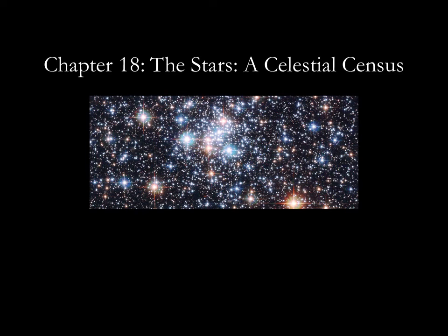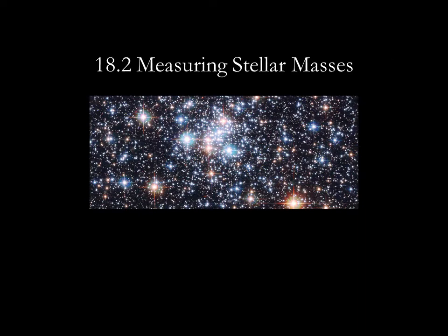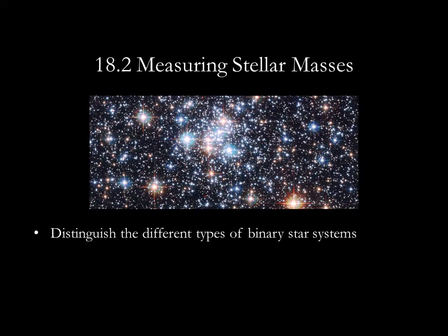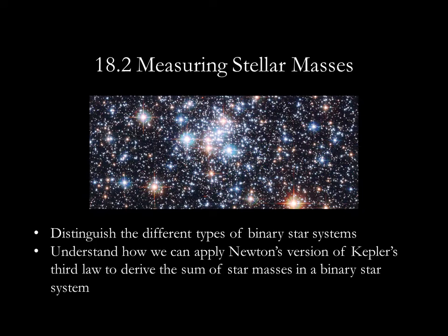This lecture corresponds to section 18.2 of the OpenStax astronomy text. The material here should allow you to distinguish the different types of binary star systems and to understand how we can apply Newton's version of Kepler's third law to derive the sum of star masses in a binary star system.